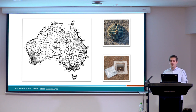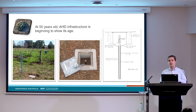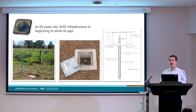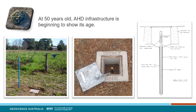If you want a new AHD height somewhere, you can start levelling from one of these permanent benchmarks. The problem is that nothing is truly permanent. The ground can move slowly over time, so fixing a height at some point on the ground 50 years ago could be quite different to where it is today. Since the 1970s, many of the original AHD benchmarks have been disturbed or even destroyed, which can make connecting levelling data to AHD hard work in places. At 50 years old this year, the datum and its infrastructure is really beginning to show its age.